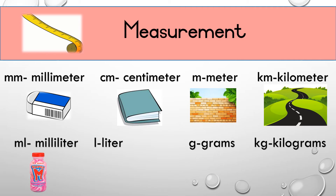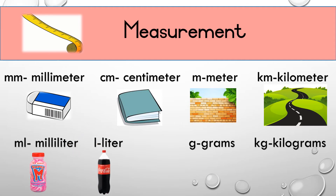Millilitres we use to measure liquid. So your can of cool drink, your juice box, your super M that you drink — we measure that in millilitres. Then something with more liquid in it we measure with litre, and the L stands for litre, like our two litre Coca-Cola or the two litre milk that we buy.